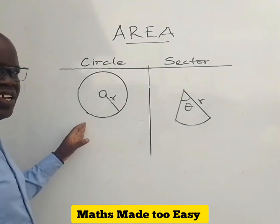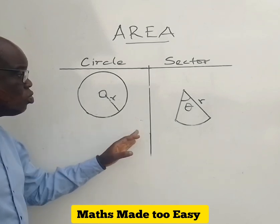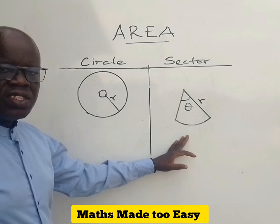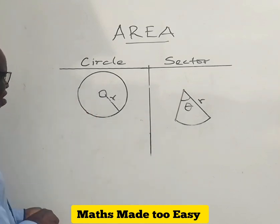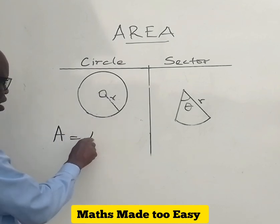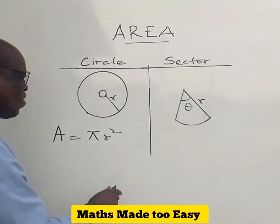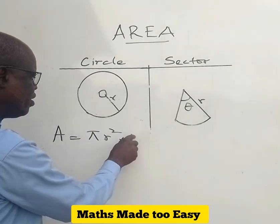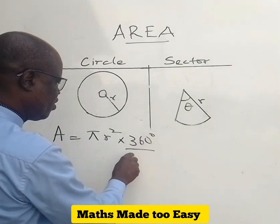Now, if you know the area of a circle — the formula for the area of a circle — you should be able to know the formula for the area of the sector without much trouble. Look at it. The area of a circle is given as pi r squared. If I want to explain further, this is multiplied by 360 all over 360.